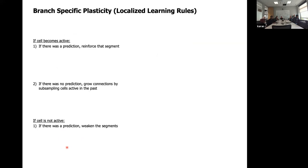These are the learning rules Jeff talked about. Whenever a cell becomes active with no prior prediction, it will try to grow connections by subsampling cells that were active in the past, so the cell will be more likely to predict — to become active — if you get that contextual activity again.